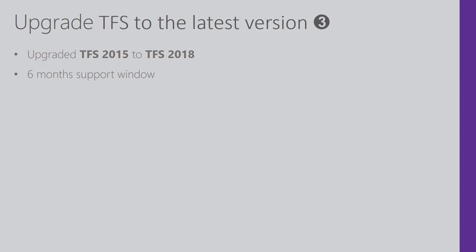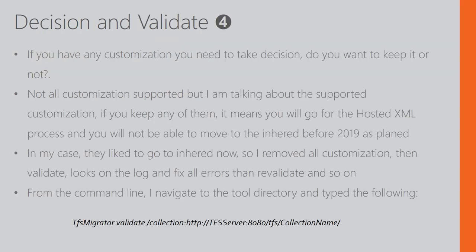To move to the next step, which is upgrading TFS: always try to upgrade to the latest version. Visual Studio Team gives you a six-month window, so if the release date of your on-premises TFS — including updates — does not exceed six months, you are good to go. In my case I upgraded from TFS 2015 to TFS 2018.